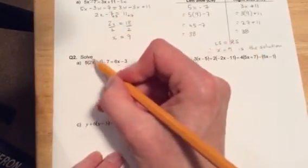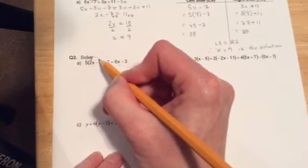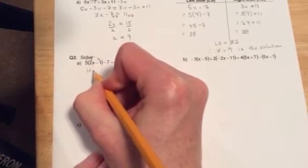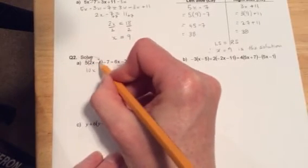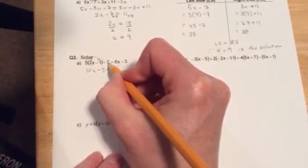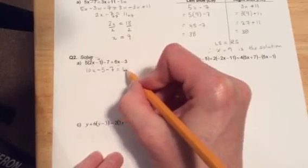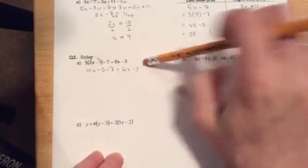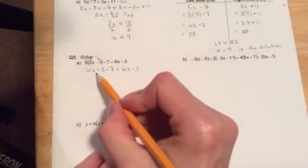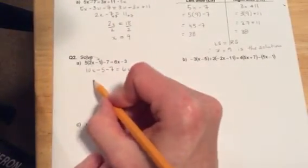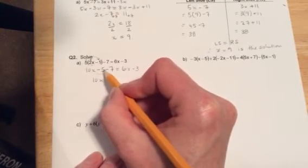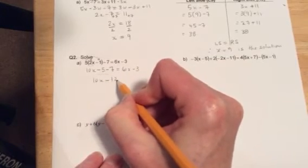Alright, so we know that the 5 in front of the bracket means we need to multiply everything in the bracket by 5 first. We're going to get 5 times 2 is 10 with an x. 5 times minus 1 will be minus 5. Then we still have minus 7, it's outside of the bracket, it doesn't get multiplied by that 5. Equals 6x - 3. And now we could put these together, collect those terms. So we still have our 10x. Minus 5 minus 7, altogether we're down 12 or minus 12.